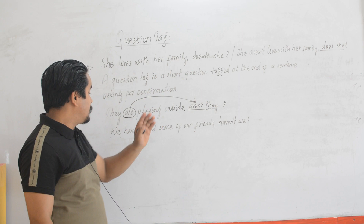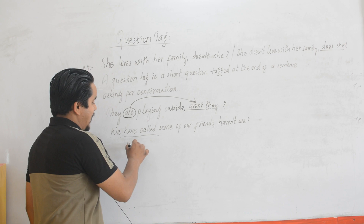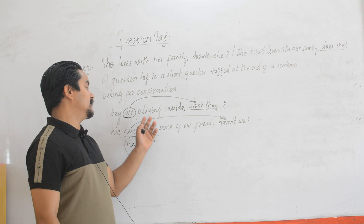Likewise, I have written: 'We have called some of our friends.' So the question tag is 'haven't we?' Why have I written 'haven't we' here? Because 'have called' — 'have' is the auxiliary verb here. The same auxiliary verb is used in the question tag. So what we need to understand is: if an auxiliary verb is used in the sentence, the same auxiliary verb is used in the question tag. This is one of the rules.